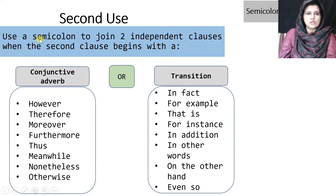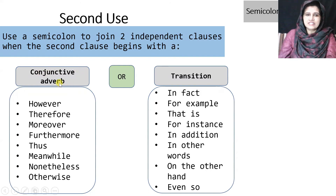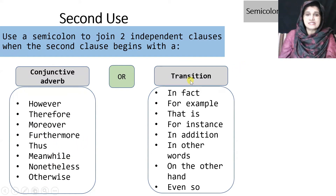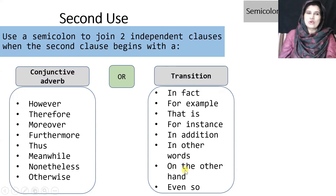We use a semicolon to join two independent clauses when the second clause begins with a conjunctive adverb or transition. Examples of conjunctive adverbs include: however, therefore, moreover, furthermore, thus, meanwhile, nonetheless, and otherwise. Transitional phrases include: in fact, for example, that is, for instance, in addition, in other words, and on the other hand.